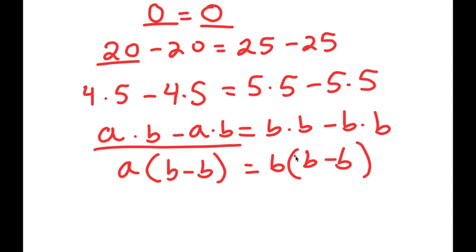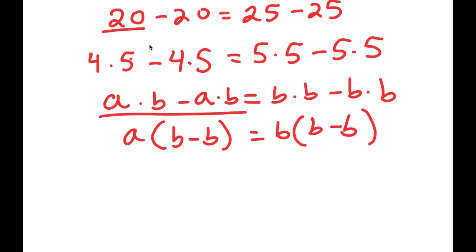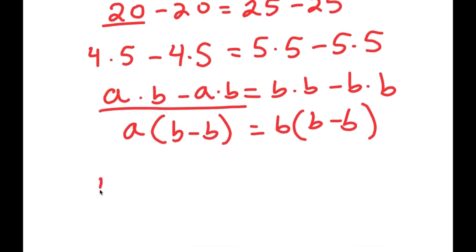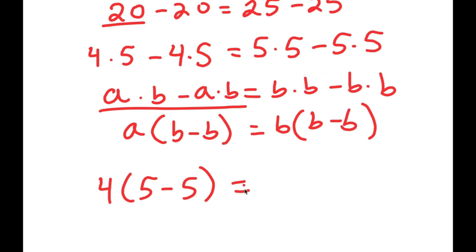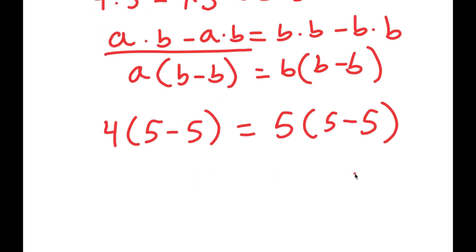In the case of this problem, from my left-hand side, I'm going to factor out 4. So I get 4 times 5 minus 5, which is equal to, from my right-hand side, I'm going to factor out 5. So I get 5 times 5 minus 5. So now I have 4 times 5 minus 5 is equal to 5 times 5 minus 5.